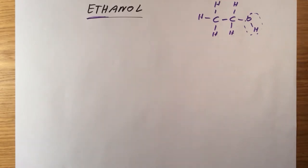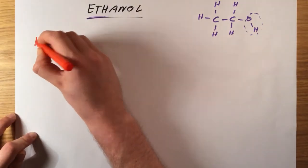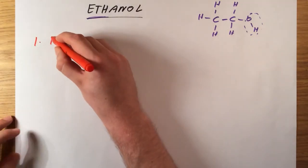So how do we actually make ethanol? Well, there are two key ways. The first way, which is the way which humans have been doing for thousands and thousands of years, is by the process of fermentation.